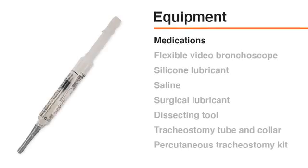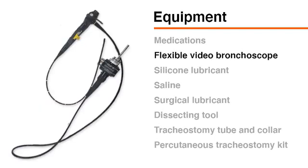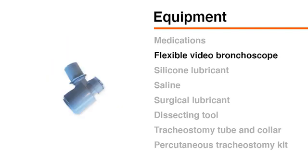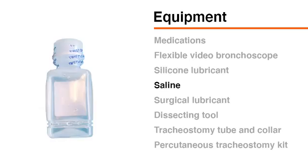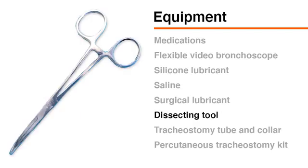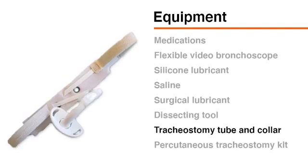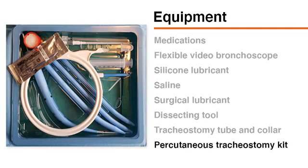To perform a bedside tracheostomy, you will need medications for sedation and paralysis, a flexible bronchoscope—preferably a video bronchoscope since it allows all personnel in the room to visualize the positioning of the oral endotracheal tube—a bronchoscope attachment for the ventilator, silicone lubricant to allow the bronchoscope to pass easily down the oral endotracheal tube, saline, surgical lubricant, a dissecting tool such as tonsil forceps or curved hemostat, a tracheostomy tube and tracheostomy collar, and a percutaneous tracheostomy kit.